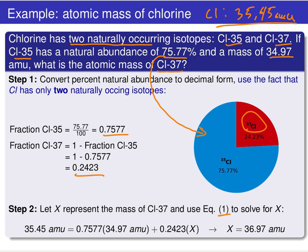Going back to equation one, the average atomic mass equals this weighted sum. We know the weights are 0.7577 and 0.2423 for chlorine-35 and chlorine-37 respectively, and we know the mass of chlorine-35. Our goal is to solve for the unknown mass of the chlorine-37 isotope. We plug in X for that unknown mass of the chlorine-37 isotope, solve for X, and we arrive at the answer we already knew: 36.97.